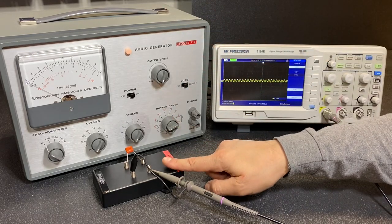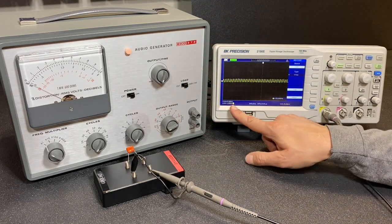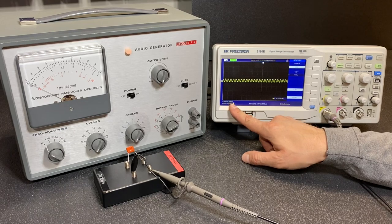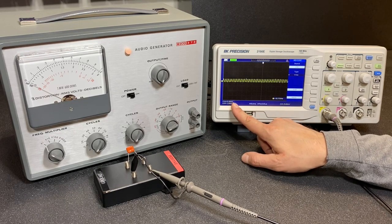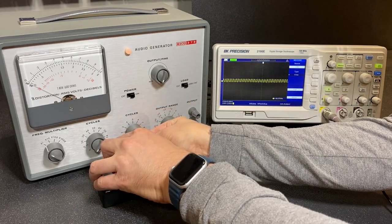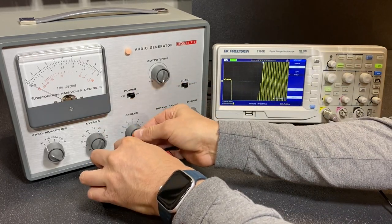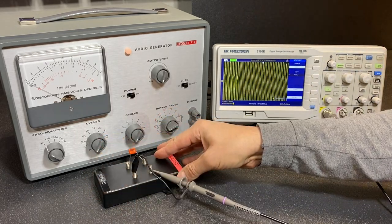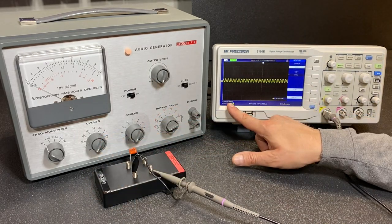And with the capacitor oriented in this position, the RMS voltage of the noise is at about 0.48 millivolts. Let's measure this noise now with the leads reversed on the capacitor.